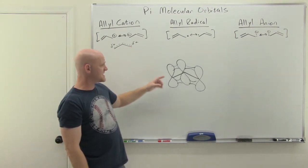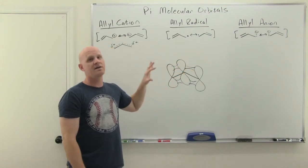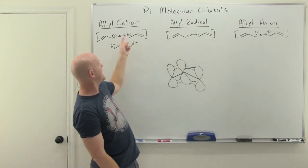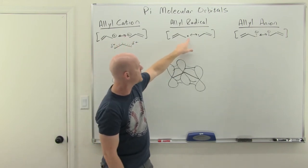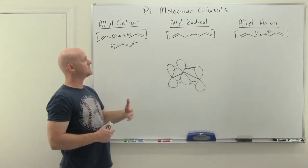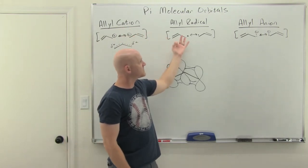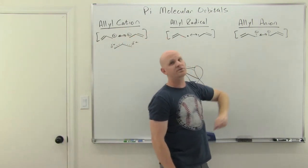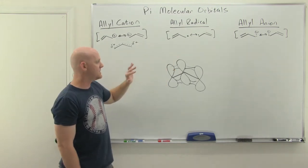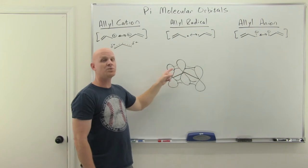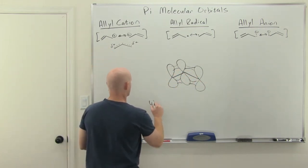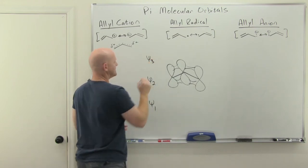With all three variants, the picture looks the same. The big difference is whether that third orbital is empty, has one electron, or has two electrons — giving two, three, or four electrons in the pi system. But the molecular orbital diagrams will be identical in all three cases. Because the conjugated system includes three atoms with overlapping pi orbitals, we're going to have three molecular orbitals: psi 1, psi 2, and psi 3.